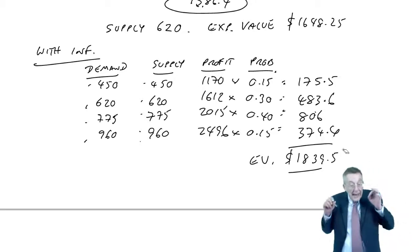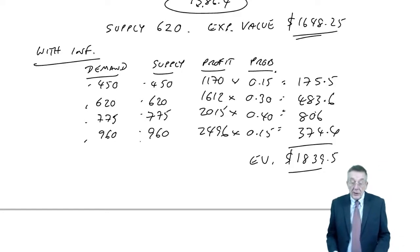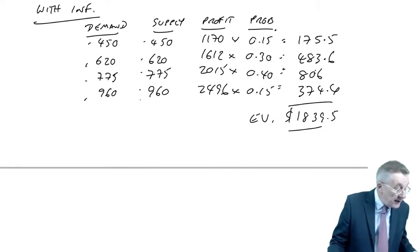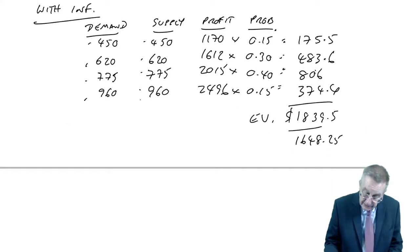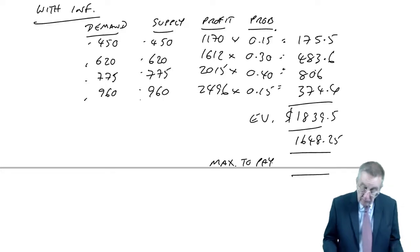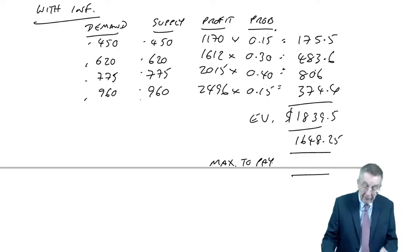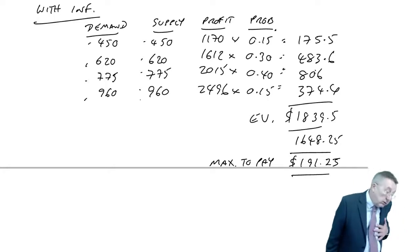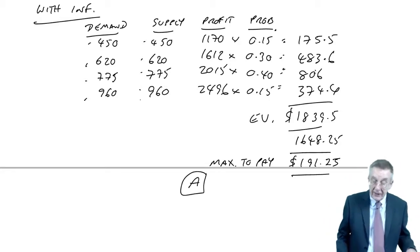Now that's the expected value if we pay for this information. If we didn't, the expected value is 1648.25. And so what does the question ask us? The maximum we're willing to pay, it's the difference. So 1839.5 minus 1648.25. The difference, the maximum to pay, 191.25. It says to the nearest whole dollar. So yes, the answer's A, 191.